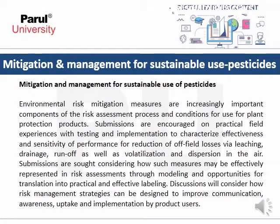Mitigation and Management for Sustainable Use of Pesticides: Environmental risk mitigation measures are an increasingly important component of the risk assessment process and a condition of use for plant protection products. Submissions are encouraged on practical field experiences with testing and implementation to characterize effectiveness and performance for reduction of field loss via leaching, drainage, runoff, as well as volatilization and dispersion in air. Discussion considers how risk management strategies can be designed to improve communication, awareness, uptake, and implementation by product users.